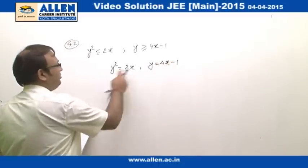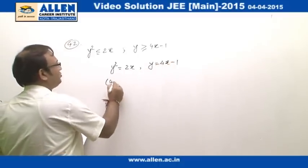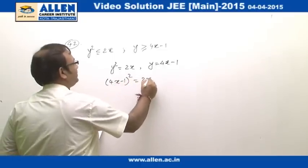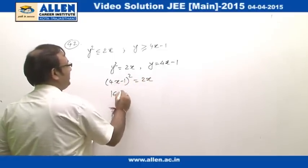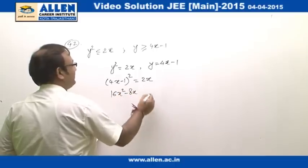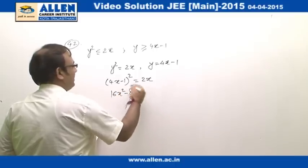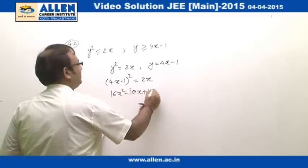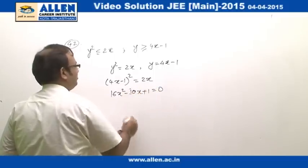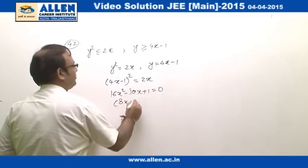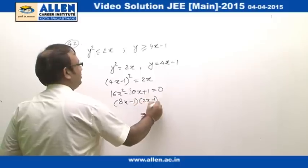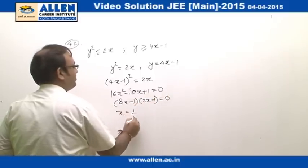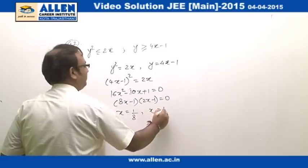Substituting, we get (4x−1)²=2x, which expands to 16x²−10x+1=0. Factoring gives (8x−1)(2x−1)=0, so x=1/8 and x=1/2.